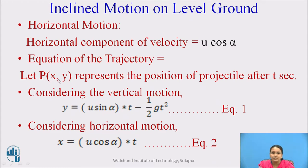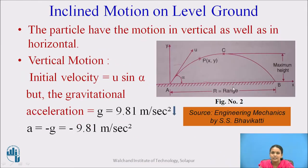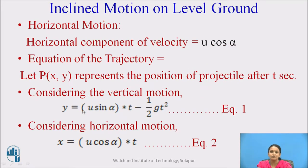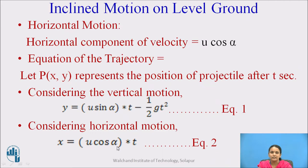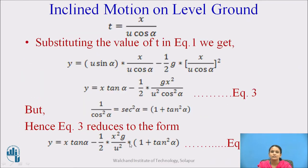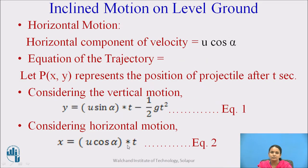Let P represent the position of the projectile after T seconds. If you observe this figure, P will represent the position of the particle after the interval of time T. Considering the vertical motion, Y is equal to U sine alpha into T minus one-half g T squared — that is the equation of linear motion. For horizontal motion, X is equal to U cos alpha into T.